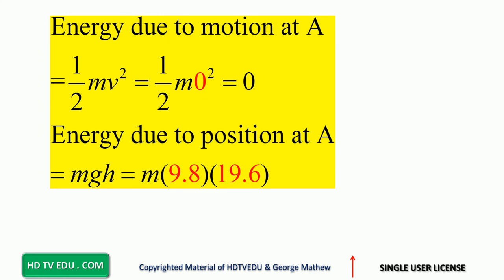Energy due to motion is kinetic energy: one-half mv squared, where m is mass in kg and v is speed in meters per second. When we are at rest, the speed is zero, so the energy due to motion at point A is zero.